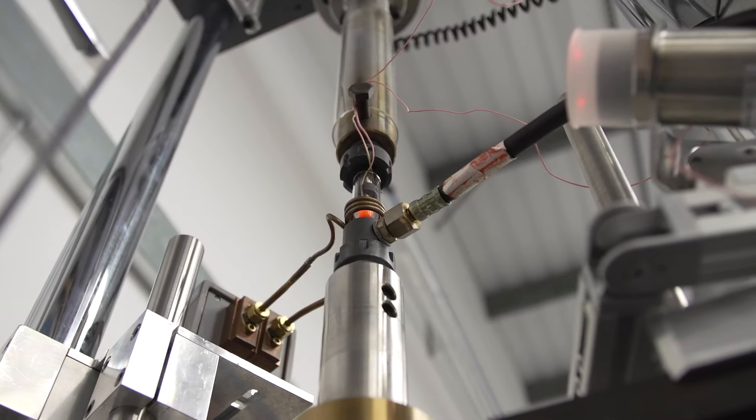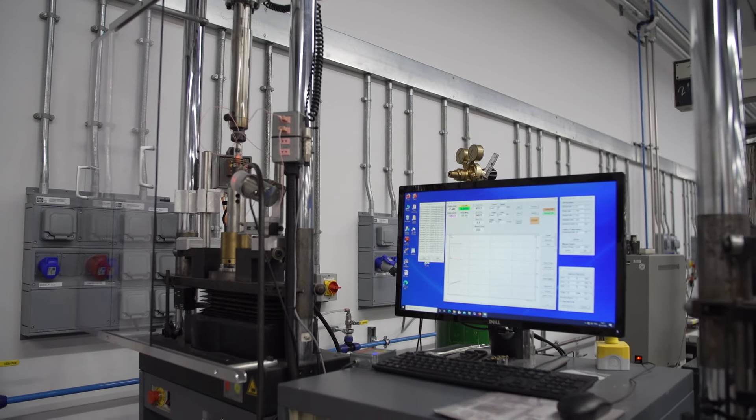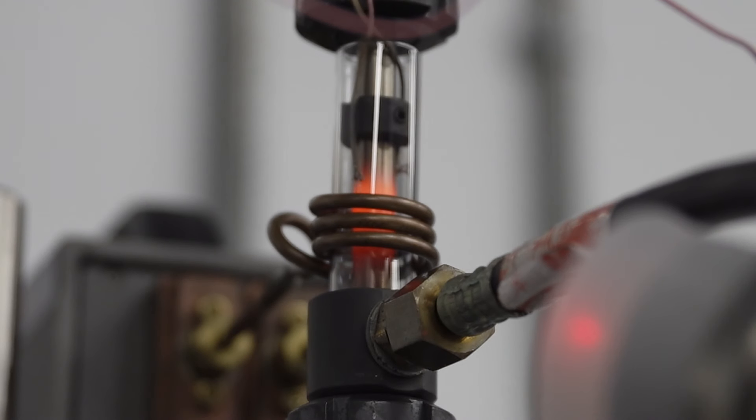Powder interlayer bonding, we call it PIB for short. You have a powder interlayer on the faying surfaces of the test pieces or geometries to be joined. The powder will fill any asperities and so helps make the joint.